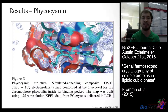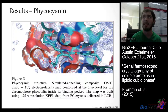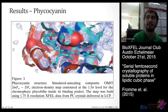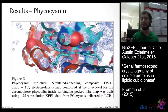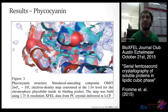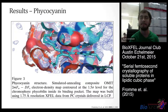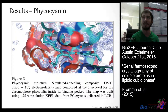An electron density omit map shows the chromophore matching up very well with the determined electron density — the wireframe agrees well with the chromophore depicted. Using soluble proteins inside LCP does not appear to have any significant negative effects on the structures obtained. Importantly, the proteins were crystallized in liquid form rather than inside the LCP itself, meaning this method could be coupled to many existing crystallization techniques.